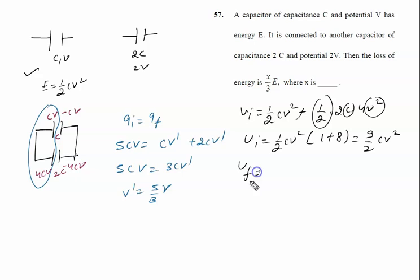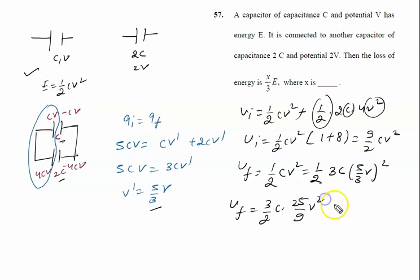U final is written as half net capacitance, half CV square is the formula. So half net capacitance, C and 2C in parallel, so it is 3C. Common voltage is 5 by 3 into V square. So final energy is given by 3 by 2C, 25 by 9 V square.